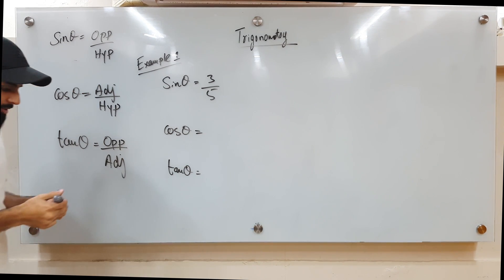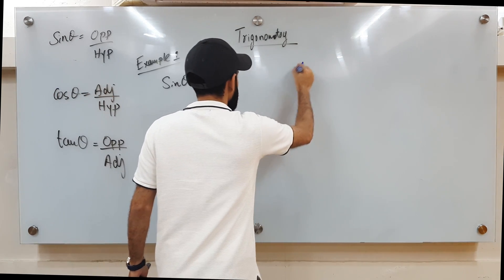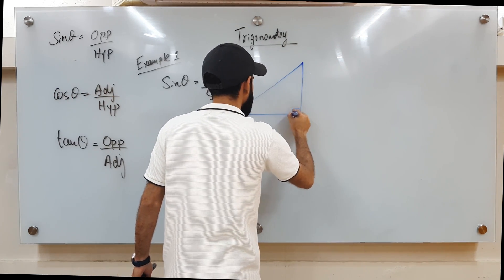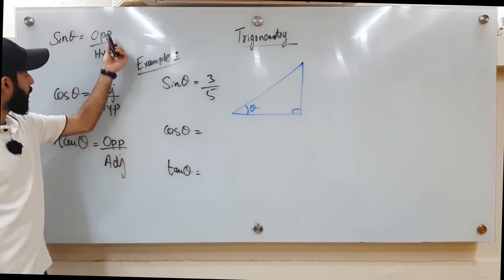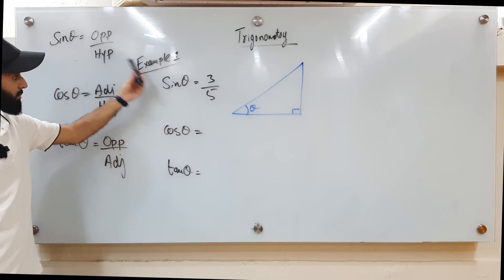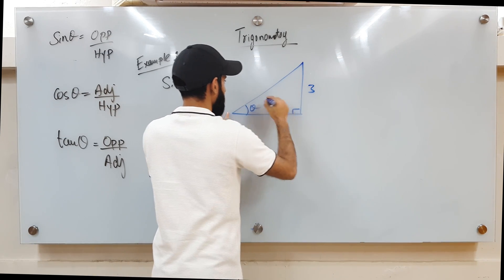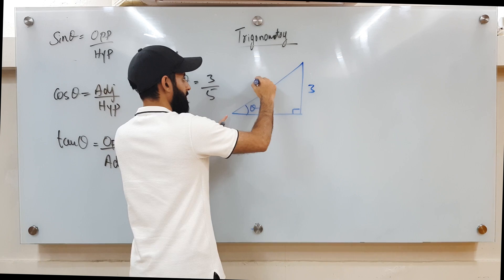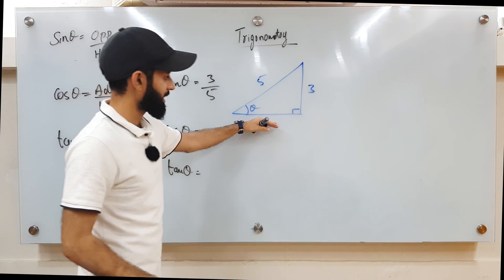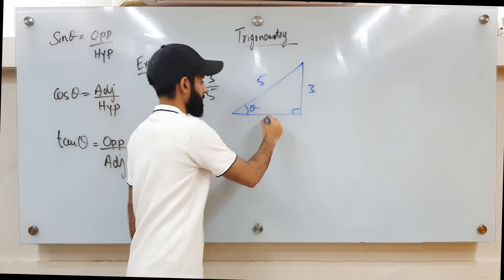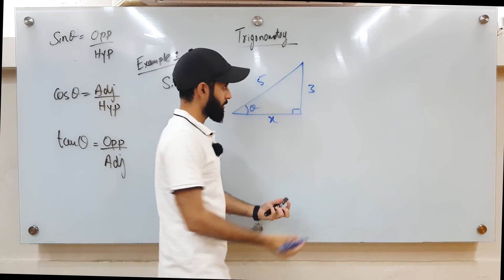The easiest way to do this is with the help of a triangle. Considering that sine theta equals 3 over 5, my opposite length is 3 and my hypotenuse length is 5. Using the Pythagorean theorem, I can figure out the adjacent length — let's call it x.